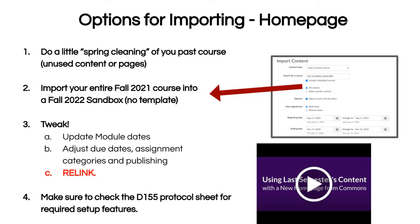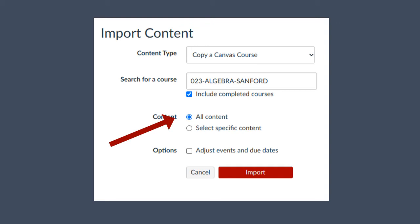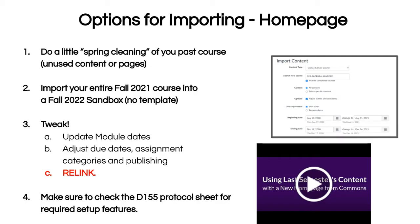Once you're done, you're going to start importing your fall 2021 course into a sandbox course. In your sandbox, you're going to go to 'Import Existing Content,' but this time you're going to import all content. When you do that, I would suggest adjusting your due dates by just removing them altogether so it's a little less confusing for you and for students. Then you're going to have to tweak your due dates, the module dates and headings, the assignment categories, and just making sure that everything is linked properly. But you'll have all of your content there to reuse.